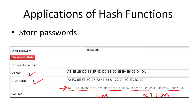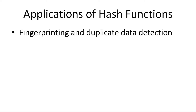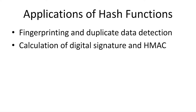Hash functions are also used for fingerprinting to detect duplicate data or to uniquely identify files. If two files have the same hash value, this means they are the same files. Although hash functions as-is cannot be used for authentication, they can be incorporated in other algorithms to achieve authentication. For instance, digital signatures are typically calculated on hash values. Similarly, hash-based message authentication code algorithms, also known as HMAC, utilize hash functions. We will discuss digital signatures and HMAC later.